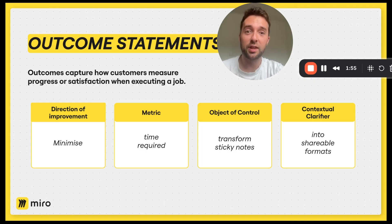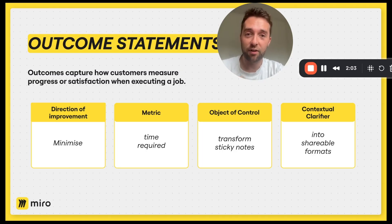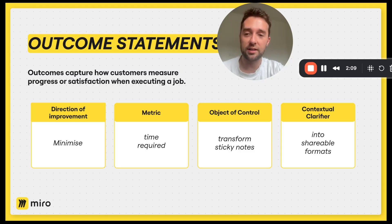The prioritized outcome statements we would then take into an ideation brainstorming session with the team to come up with solutions. The goal is to identify the areas we should be focused on. The outcome statement has a specific articulation which includes direction of improvement — minimize or maximize — a metric so we can measure progress, an object of control, and a contextual clarifier.